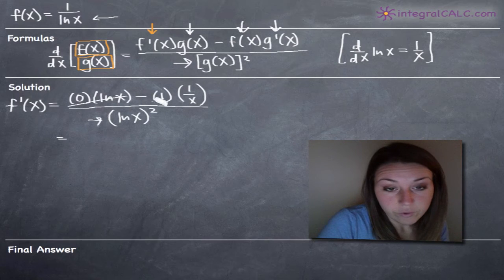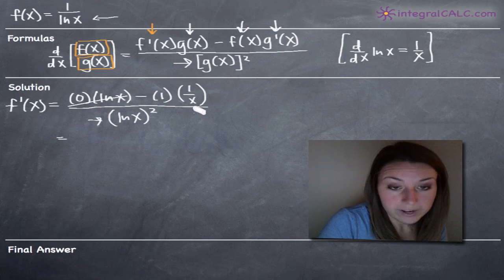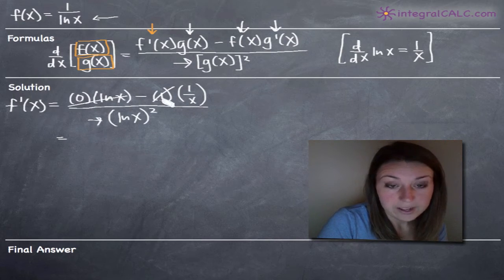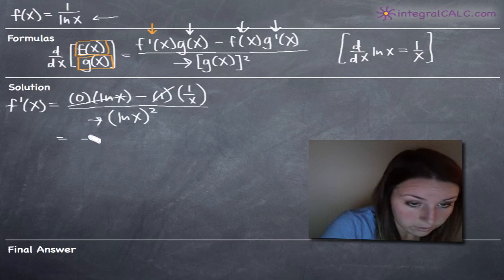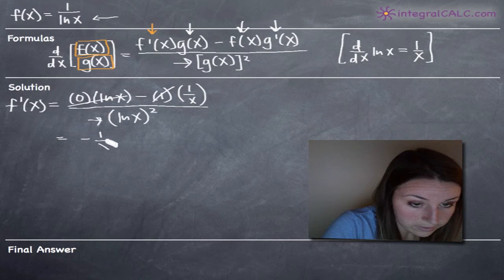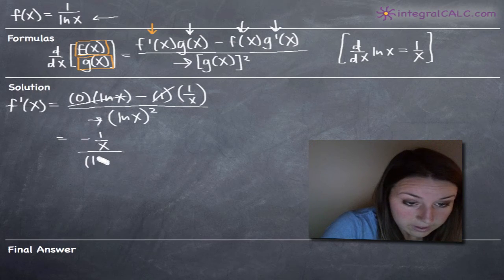And then for the second term, we're going to end up with, this one is redundant, we don't really need to write it. So we'll end up with negative 1 over x. And then our denominator is still just going to be the natural log of x squared.